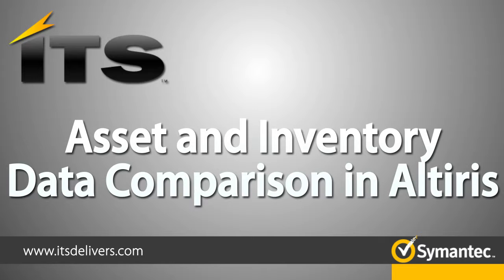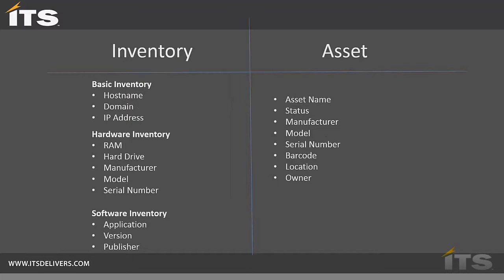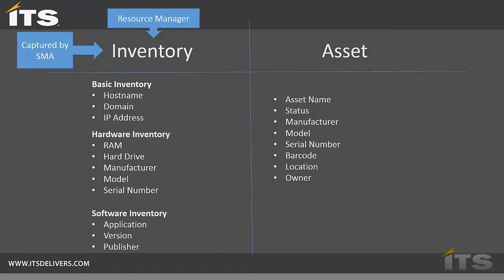Let's look at some of the data we have. On the left hand side we have inventory data — I've broken it down into basic inventory, hardware inventory, and software inventory. On the right hand side we have a sample of what you would see for asset data. The inventory data is viewed through Resource Manager and applies to desktops, laptops, or servers. This data is captured by the Symantec Management Agent or the Inventory Solution plug-in.